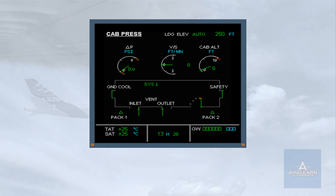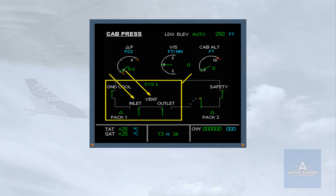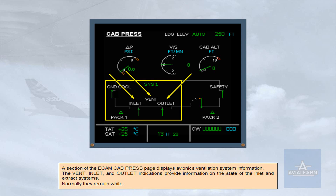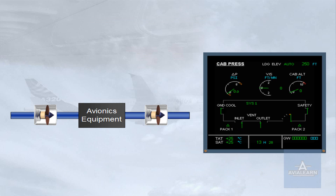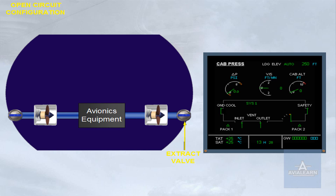A section of the ECAM CAB PRESS page displays avionics ventilation system information. The VENT, INLET, and OUTLET indications provide information on the state of the inlet and extract systems. Normally they remain white. The air is blown through the avionics equipment, extracted, and then discharged overboard via an extract valve. Both valves are open — this is the open circuit configuration.